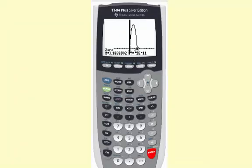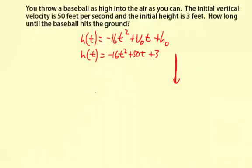That means after about 3.2 seconds, the ball would hit the ground again. And there's our answer. How long until the baseball hits the ground? 3.2 seconds.